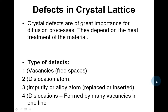The defects in crystal lattices are of great importance for diffusion processes and depend on the heat treatment of the material. There are four types of defects: vacancies, which are free spaces along the molecular structure; dislocation of an atom; impurity or alloy atoms which have been replaced or inserted; and dislocations, which are formed by many vacancies in one line.